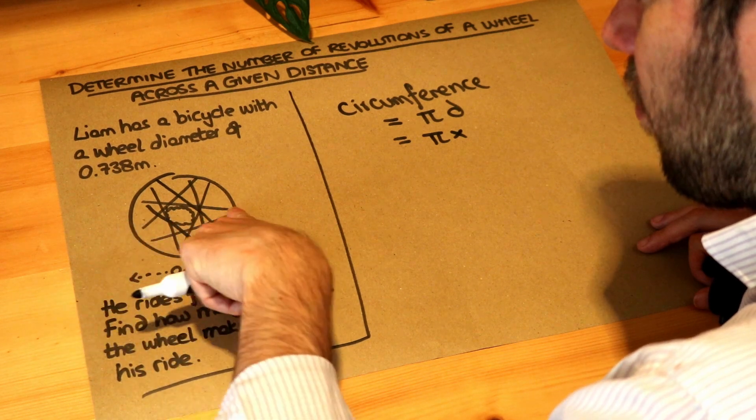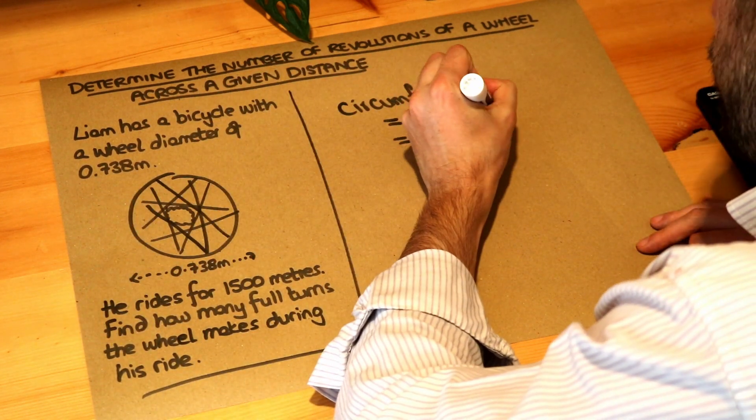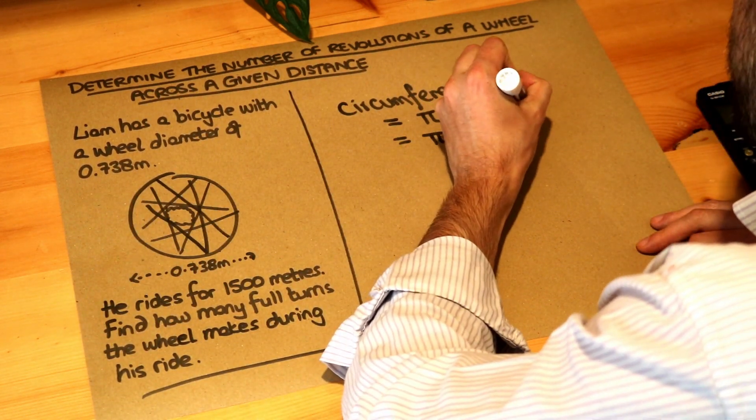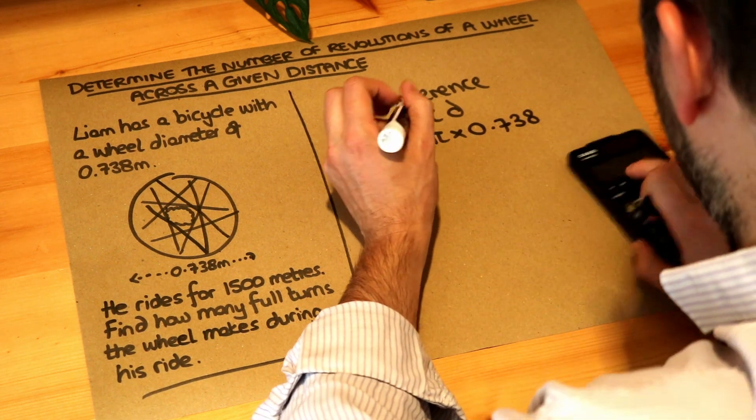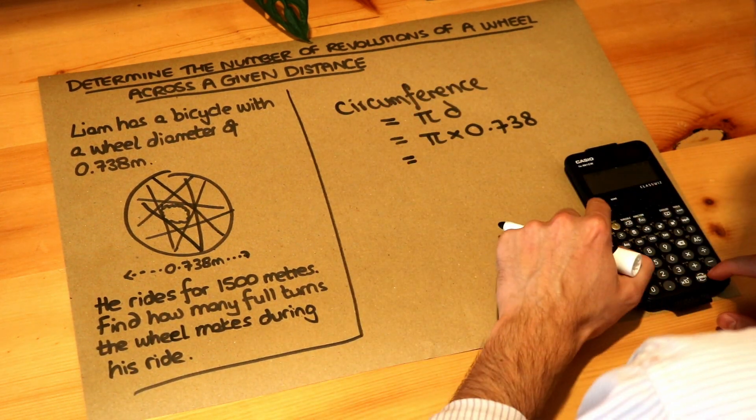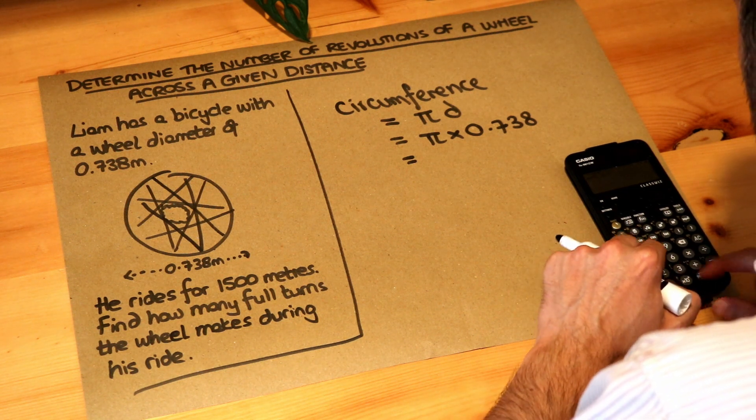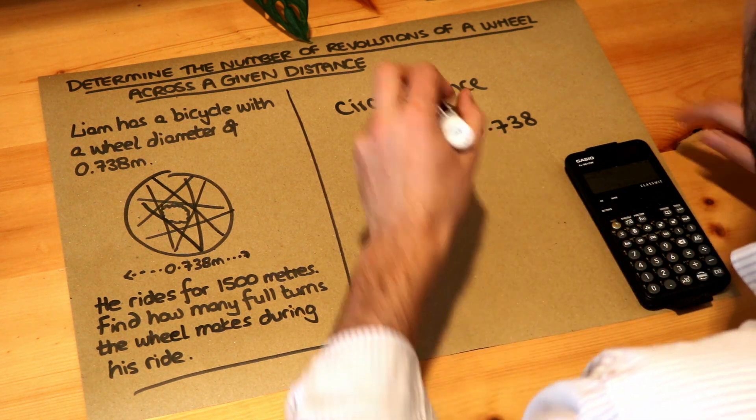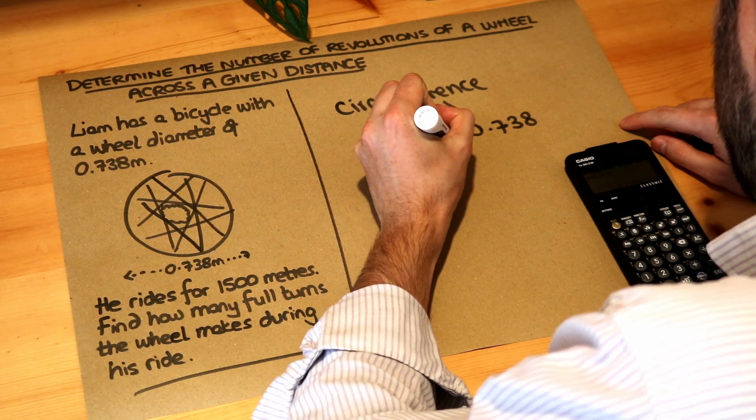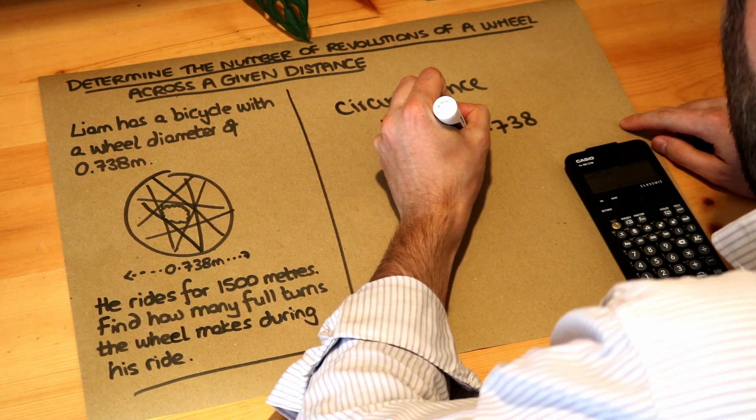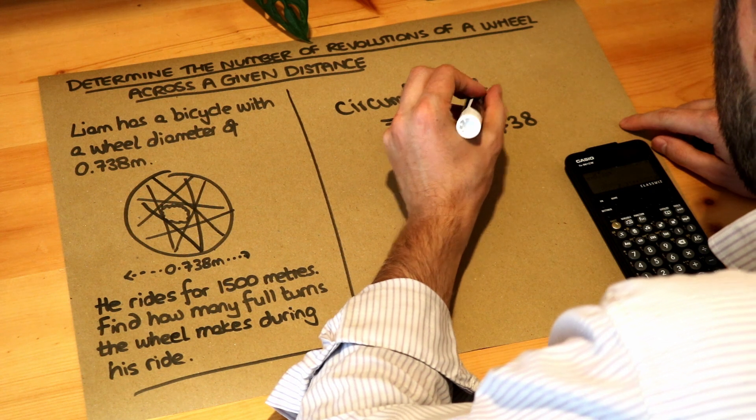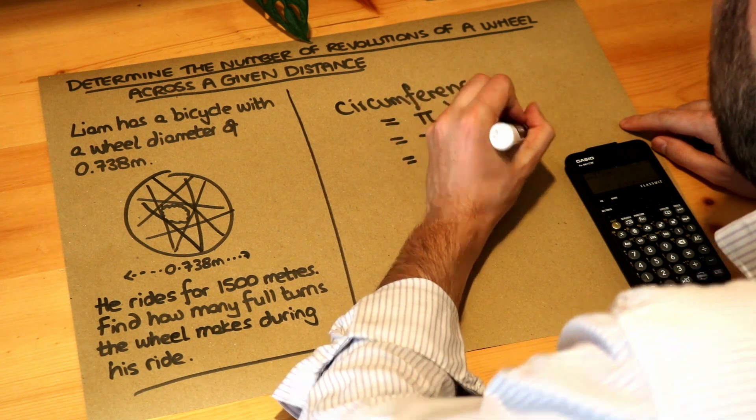We said the distance from one end of the circle to the other was 0.738. If we do that on our calculator, shift pi times 0.738, that gives you 2.3185 meters. That's enough decimal places for the moment.